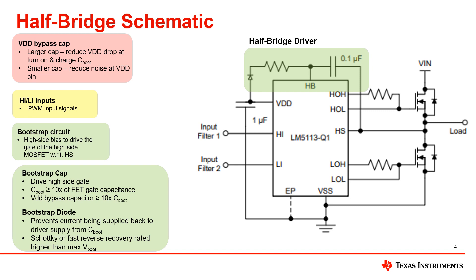The VDD bypass capacitor should also be greater than or equal to 10 times the bootstrap capacitor. In this schematic, we will follow the suggestion. As you can see, the VDD bypass capacitor is 1µF, which is 10 times greater than the 0.1µF bootstrap capacitor. Keep in mind that the capacitor values may be different depending on the devices you are using, so please be sure to double check the recommended values.